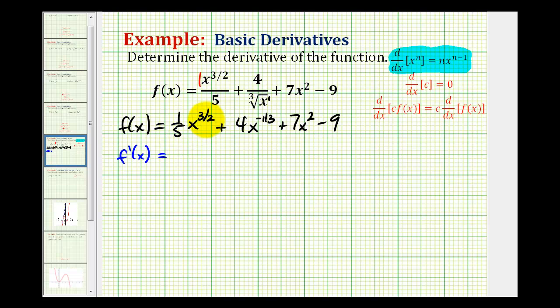The derivative of one-fifth x to the three-halves is going to be one-fifth times the derivative of x to the three-halves, so we'll multiply by the exponent. And the new exponent will be three-halves minus one.